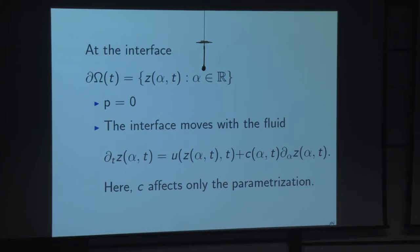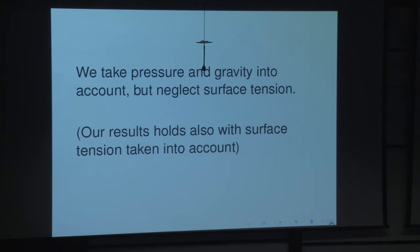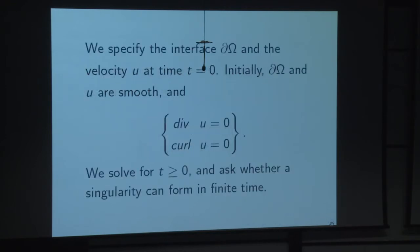In this version of the problem we've taken pressure and gravity into account with neglected surface tension. One can put in surface tension; it doesn't significantly change the problem, either the physics or the mathematics at this level. We take the interface and the velocity to be initially smooth, with the velocity initially divergence-free and curl-free. We then solve for non-negative time and ask whether a singularity can form in finite time. The depth of the water is infinite, and one can make a version with finite depth.